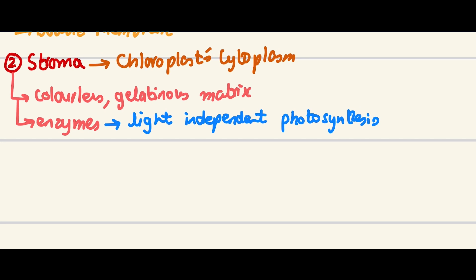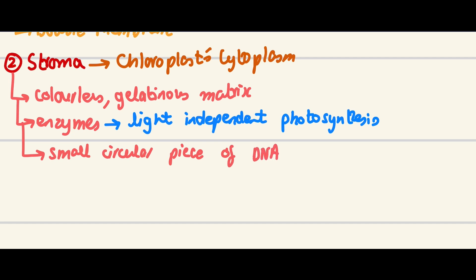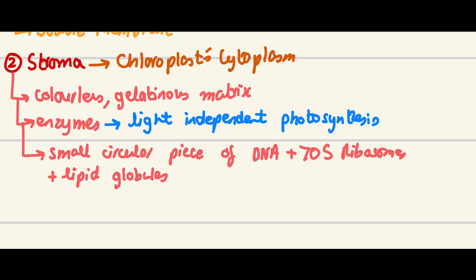A few more things in the stroma: there is a small circular piece of DNA, similar to what's found in mitochondria. There are also 70S ribosomes — plural — and lipid globules, which are essentially fat droplets. You don't really need to know their specific purpose in detail at this level.